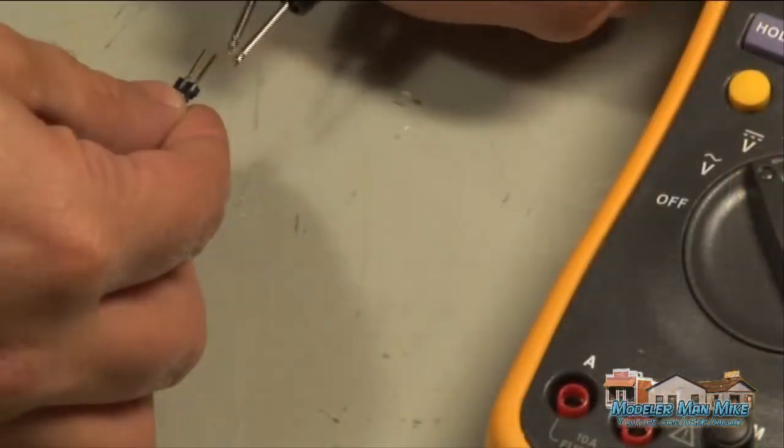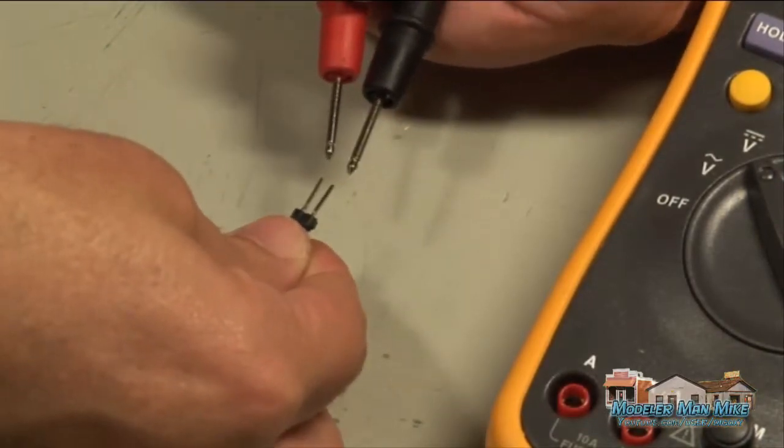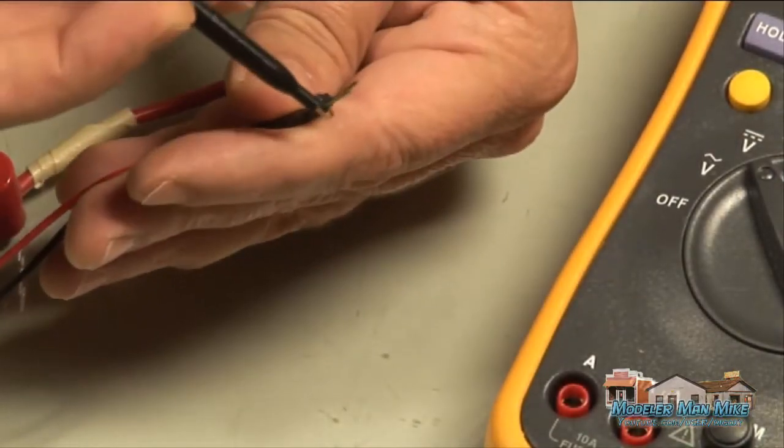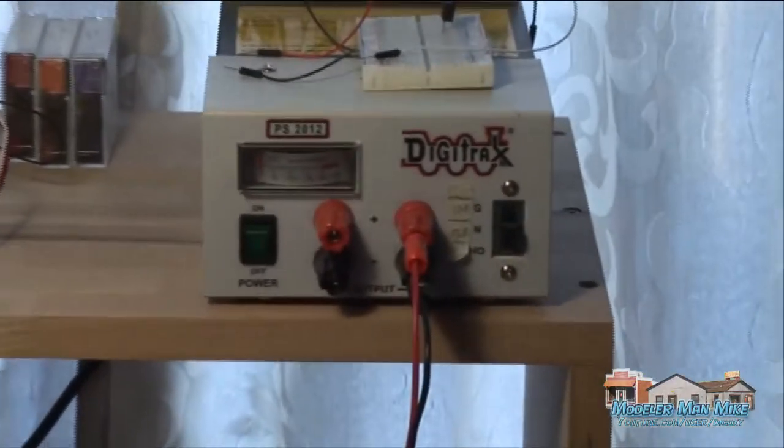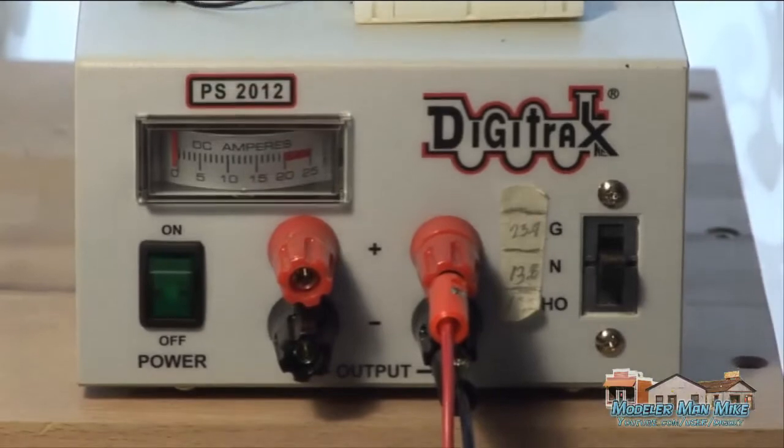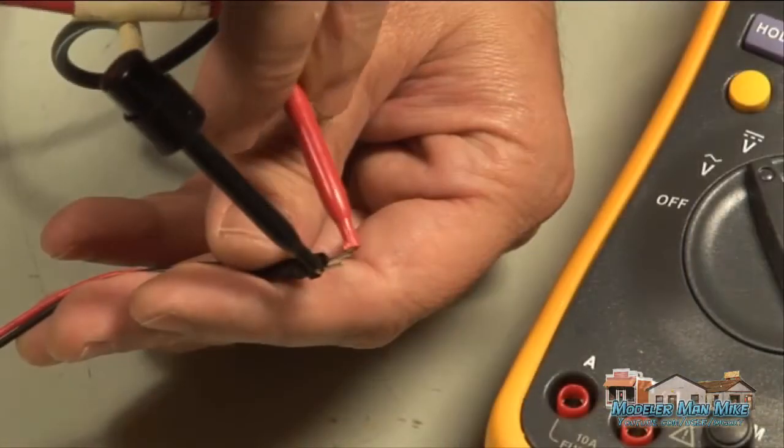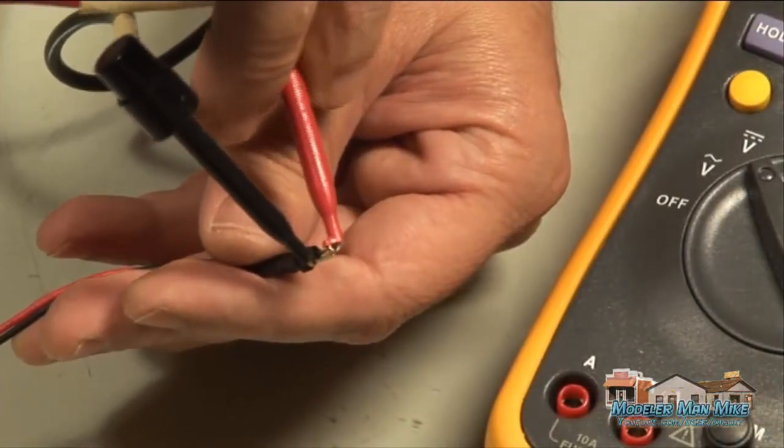Sometimes when you want to check something these probes are a little bit too big or just can't hang on. You get the little clippies and you can clip them on easily. Here I'm testing the voltage on my bench power supply. Just clip this on my little leads here and get my reading.